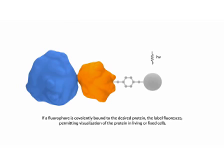If a fluorophore is coupled to the desired protein, the label fluoresces, permitting visualization of the protein in living or fixed cells.